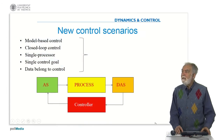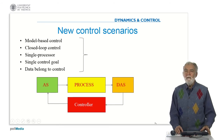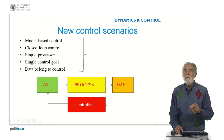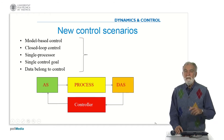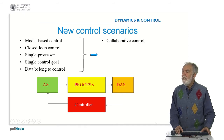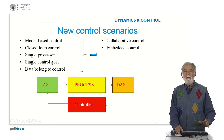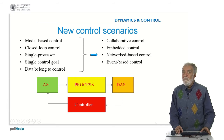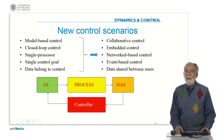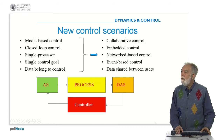We can summarize this by saying that in the classical control scenario we have model-based control — designing the control based on the model of the process. There is a closed-loop control, one single processor or controller, a simple single control goal, and the data belong to the control loop — point-to-point connection. We are now moving to new scenarios where we will have collaborative control, embedded control, network-based control, event-based control, and the data are shared between different users.